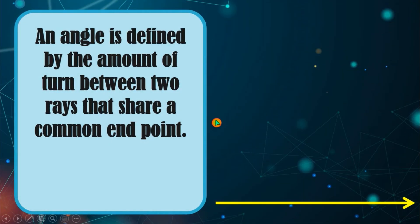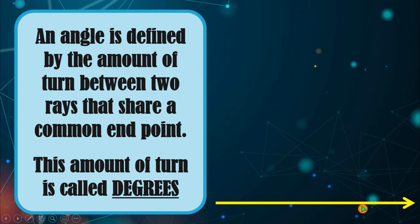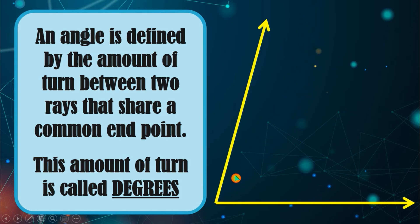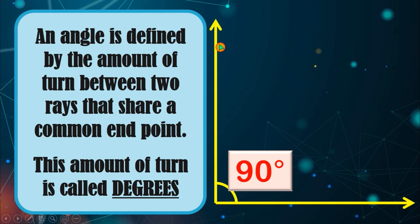An angle is defined by the amount of turn between two rays that share a common endpoint, and this amount of turn is measured in degrees. You can see that this is the initial ray and this is the terminal ray — the one that keeps on rotating, like a clock but counterclockwise. In this case, our terminal side opened up to 90 degrees.